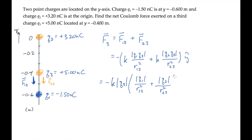We can substitute the known values. The Coulomb constant is here, the magnitude of Q3. Inside the parenthesis we have the magnitude of Q1 divided by the square of the distance separating charges 1 and 3, and then the magnitude of Q2 and the square of the distance separating charges 2 and 3.